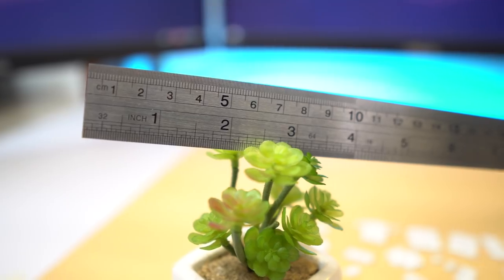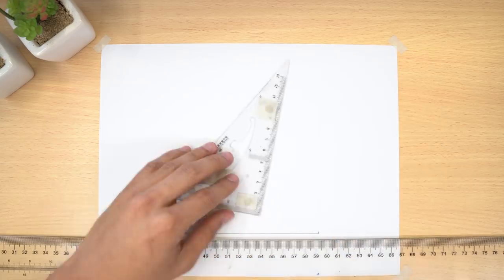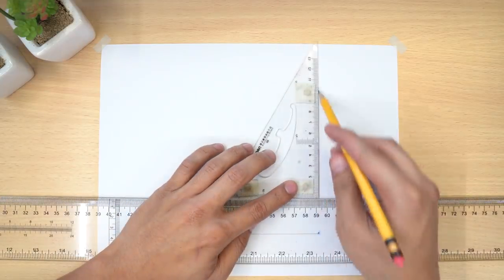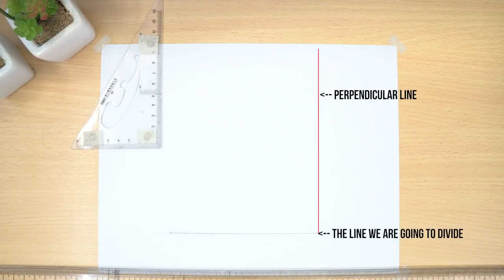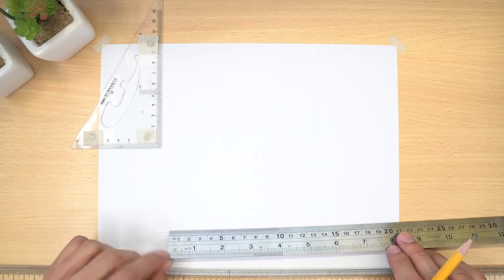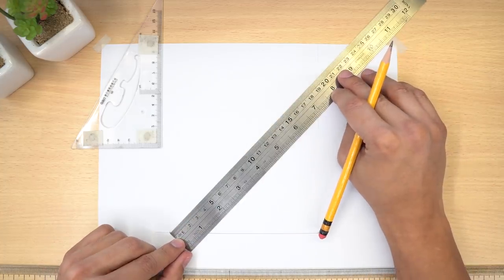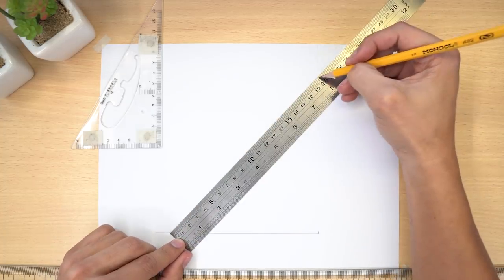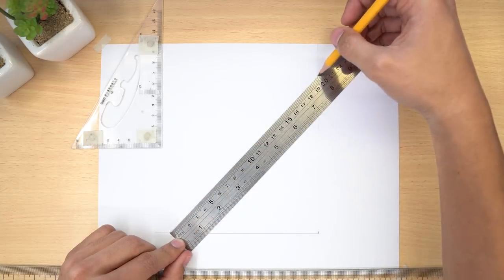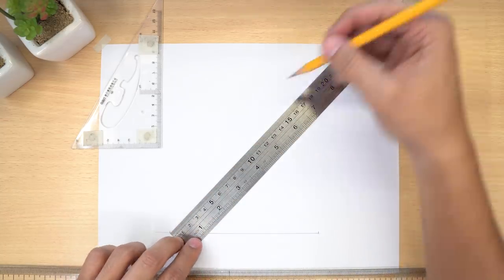All you are going to need is a ruler. Draw a perpendicular line on one end of the line that you are supposed to divide. Then choose a measurement that is easily divisible — let's say 20, since 20 divided by 5 is 4, which is easy. Align the 0 of your ruler to one end of the line, and align 20 to the perpendicular line.